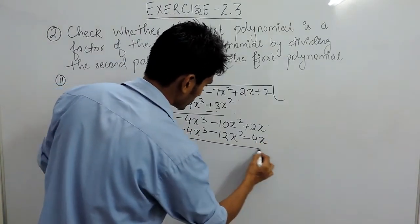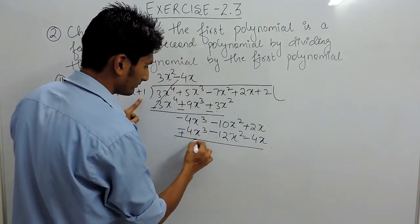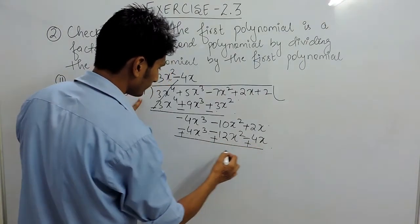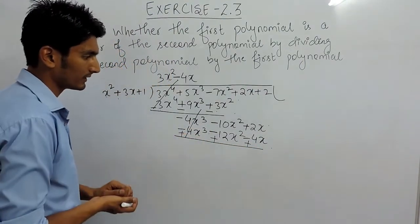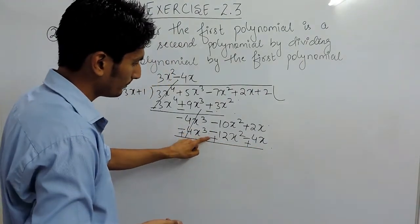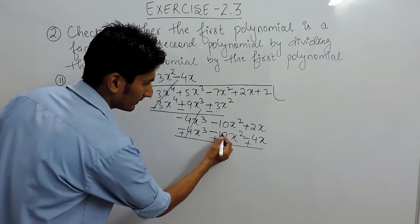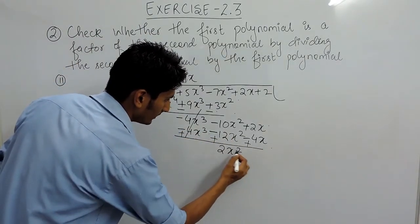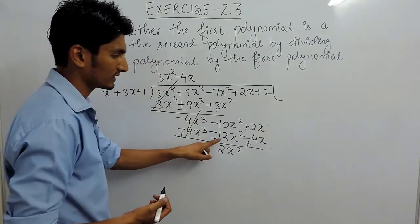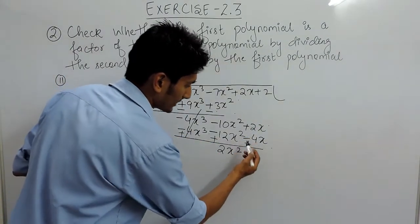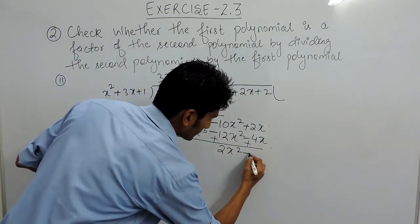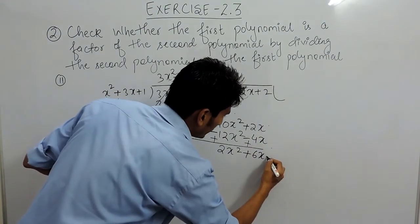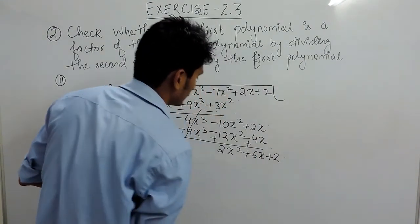Now, again you have to subtract — change the sign for all the terms. This positive negative can be cancelled out. Positive negative is negative. So, 12 minus 10 is 2x square with positive sign, because the greater value has a positive sign. Plus plus is plus 6x. And this can be copied here as it is.